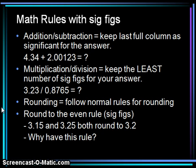We follow normal rules for rounding. We do have one special rule in chemistry called the round-to-the-even rule, which we will discuss in class. To preview: 3.15 and 3.25 both round to 3.2. Think about why you would want this rule — it does have to do with statistics.